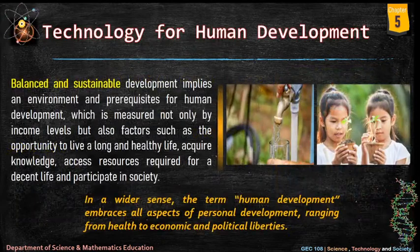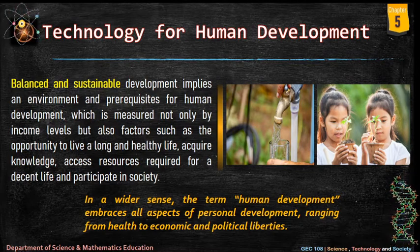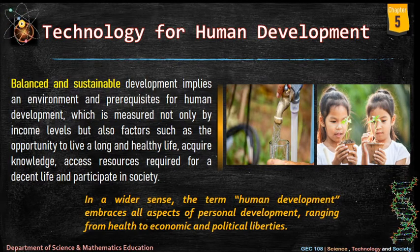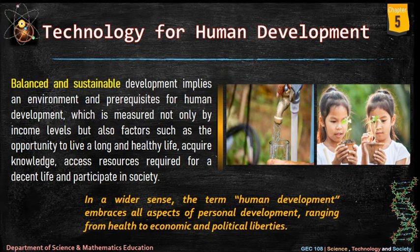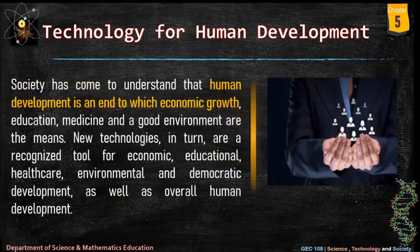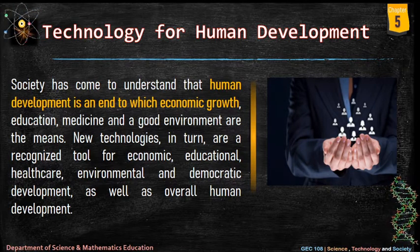Technology for Human Development: balanced and sustainable development implies an environment and prerequisites for human development, measured not only by income levels but also by factors such as the opportunity to live a long and healthy life, acquire knowledge, access resources required for a decent life, and participate in society. The term human development embraces all aspects of personal development, ranging from health to economic and political liberties. Society has come to understand that human development is an end to which economic growth, education, medicine, and a good environment are the means. New technologies are a recognized tool for economic, educational, health care, environmental, and democratic development.